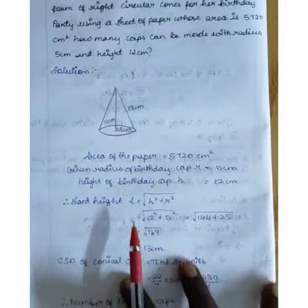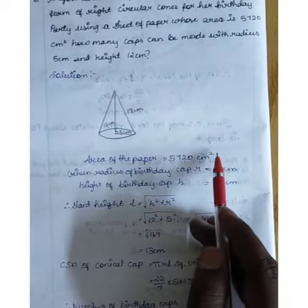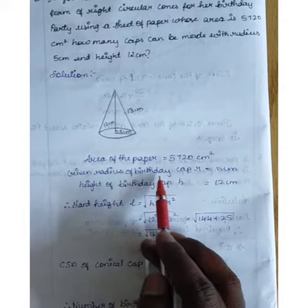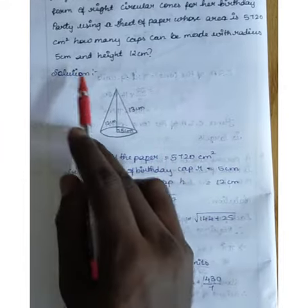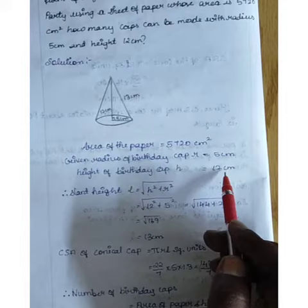First, the area of the paper is given as 5720 cm². The radius of the birthday cap is 5 cm and height is 12 cm. Now we need to find the slant height.